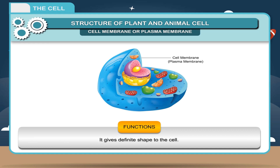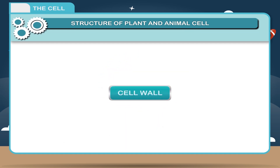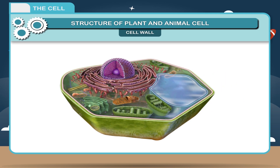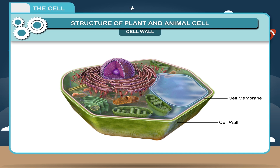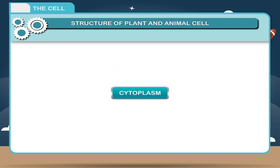Cell wall. In plant cells, an additional wall called cell wall is present which surrounds the cell membrane. It is a non-living layer made up of cellulose. Cell wall gives shape and rigidity to the cell and protects the protoplasm.